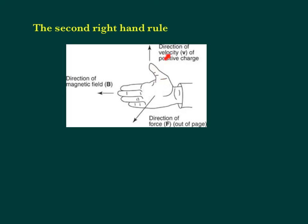Your thumb is the moving charge — a small thing. Your fingers and thumb are perpendicular to each other, and all three things are perpendicular in 3D. Think of your palm pushing — that's why it represents the force. So if you put your fingers pointing to the left and your thumb pointing up, your palm should be facing you, meaning the charge is going to be pushed towards you.